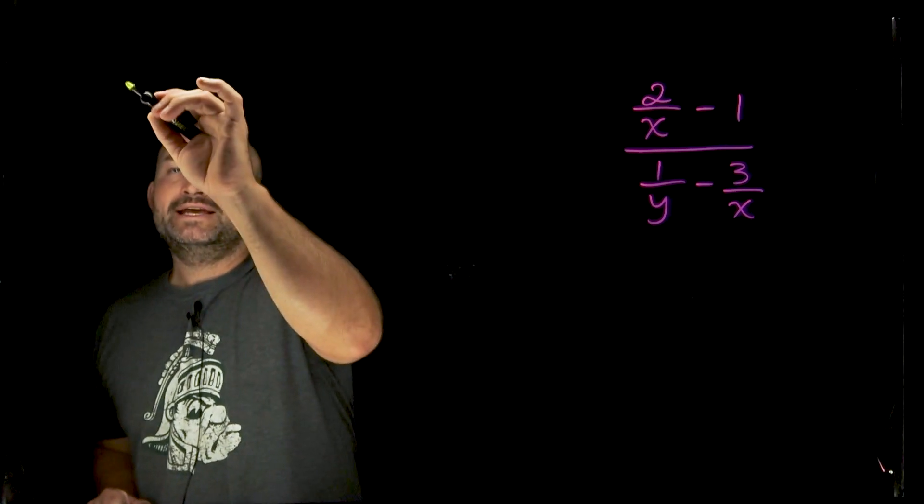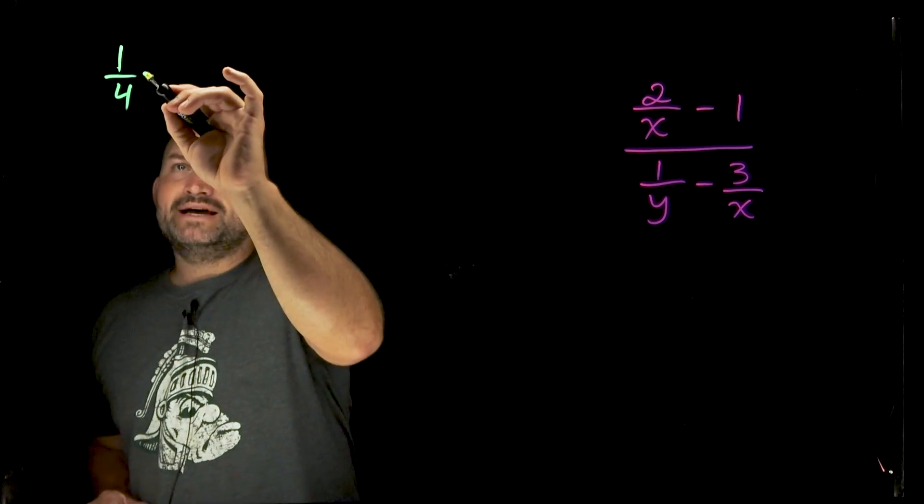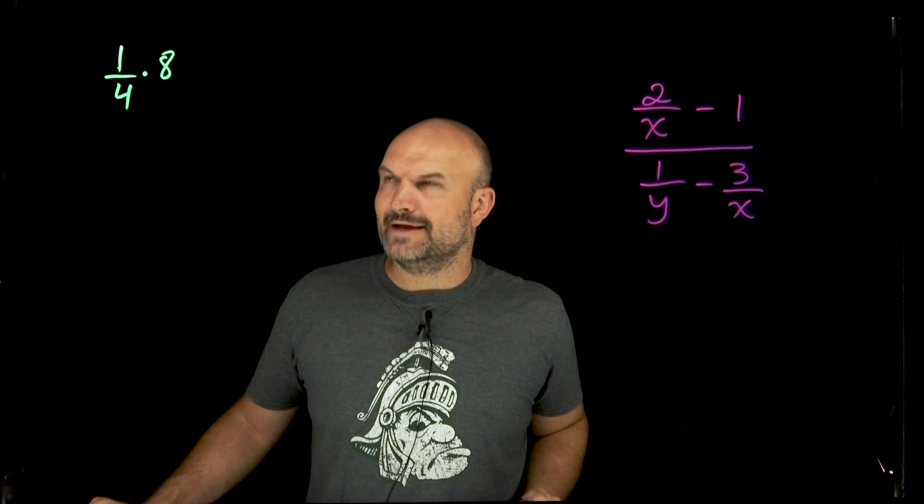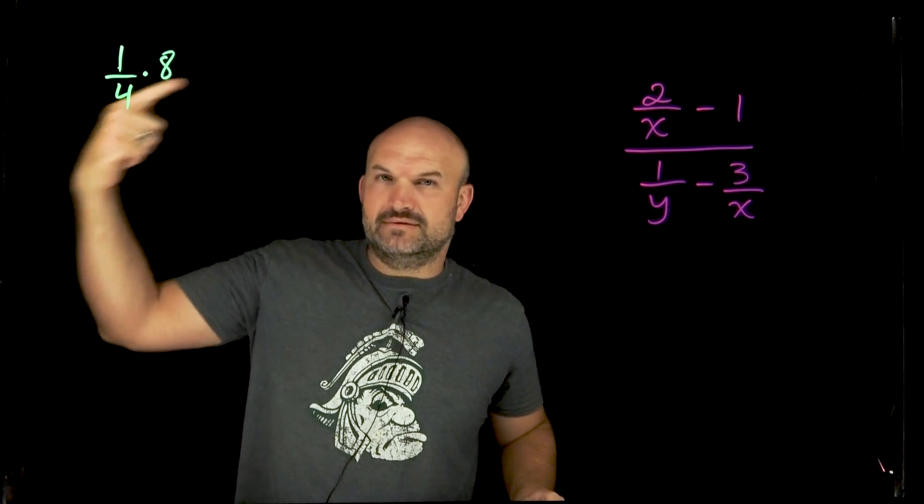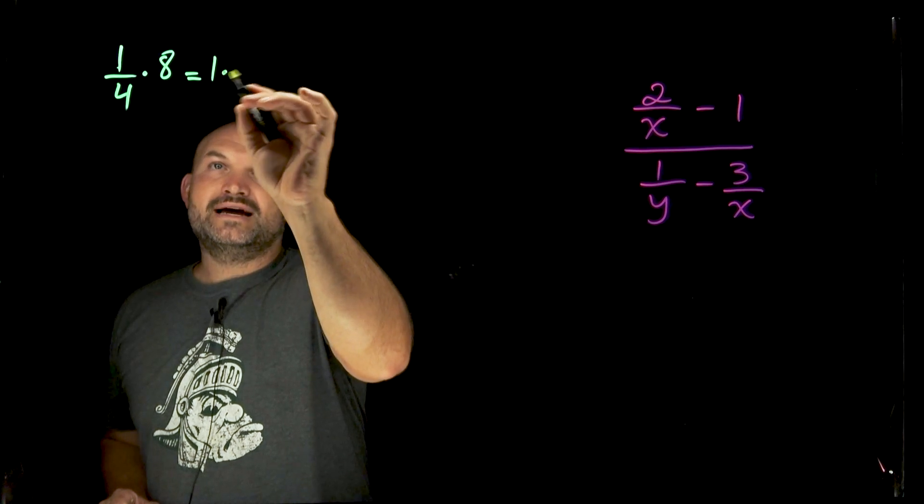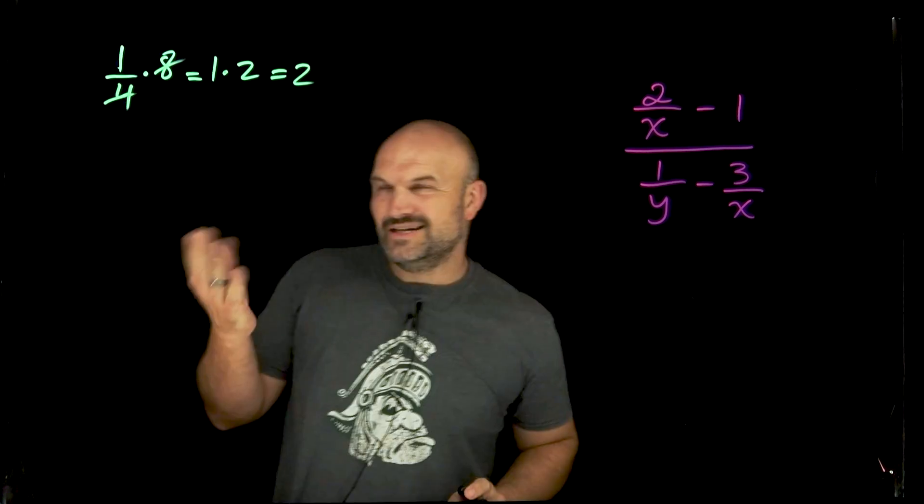So the first one is if I had, let's say, 1 over 4, if I multiply this by 8, I have just eliminated my fraction. Why? 4 evenly divides into 8 two times. So this is the same thing as 1 times 2. 4 divides 8 two times, so therefore the answer is 2.